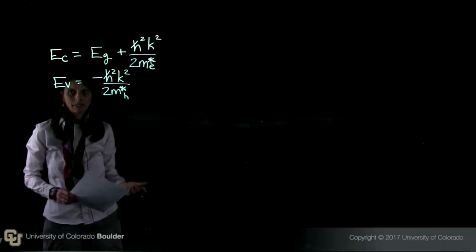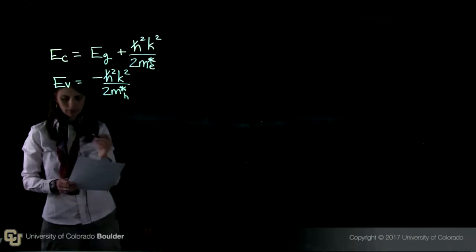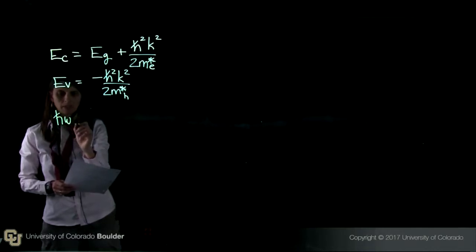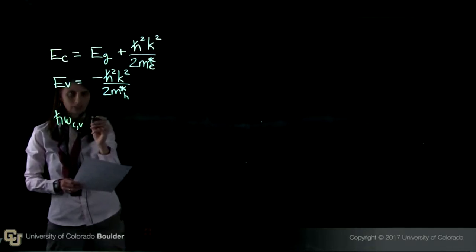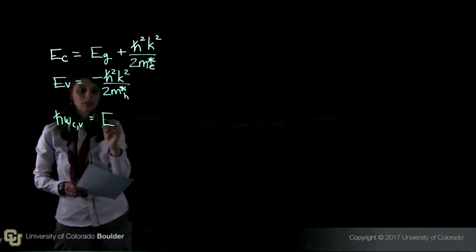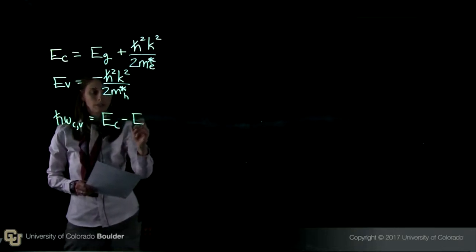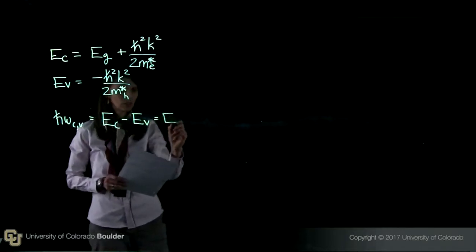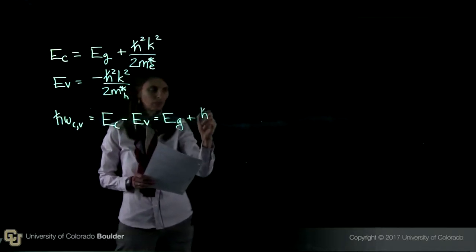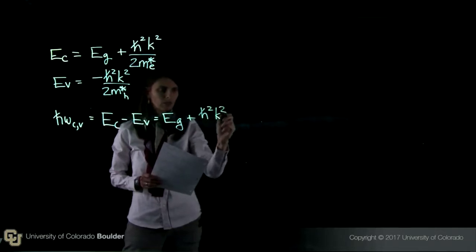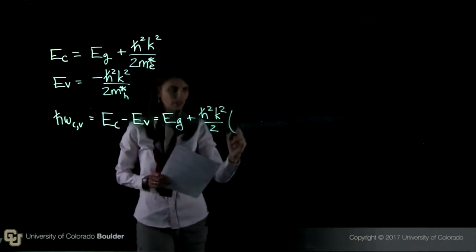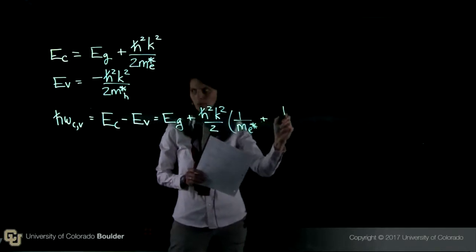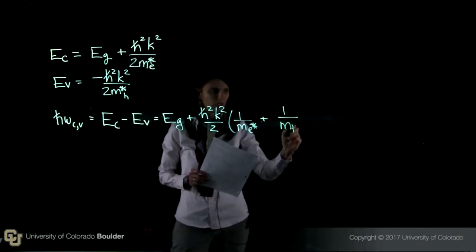So now we can write down the energy that a photon needs in order to make this transition. It's going to be h-bar omega c,v, and this is essentially just the difference of these two energies, E_C minus E_V. And this is equal to E_g plus h-bar squared k squared over 2, and then 1 over m_e star plus 1 over m_h star.